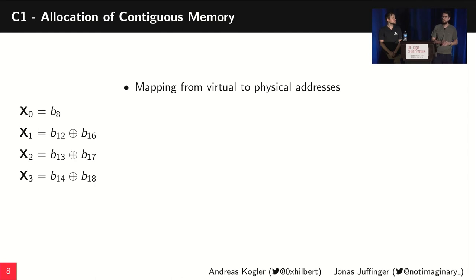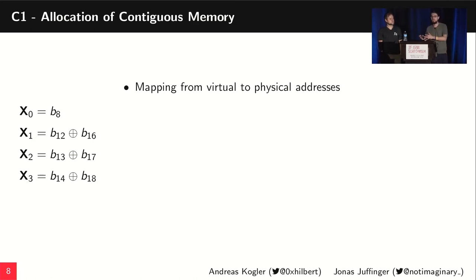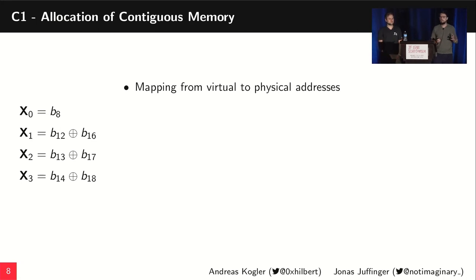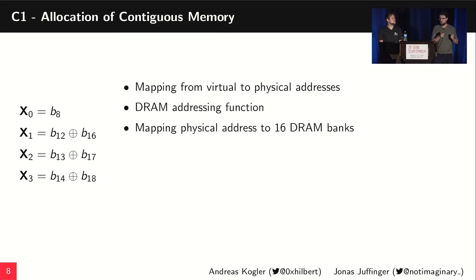The first challenge: our process runs in the virtual address space, but we need to access specific physical rows in DRAM to make HalfDouble possible, so we need information about the mapping from virtual to physical addresses. Some works use 2-megabyte huge pages for this, but they can easily be deactivated by the operating system. So instead, we simply allocate a lot of memory and try to find memory blocks where contiguous virtual memory is also mapped contiguously in physical memory.